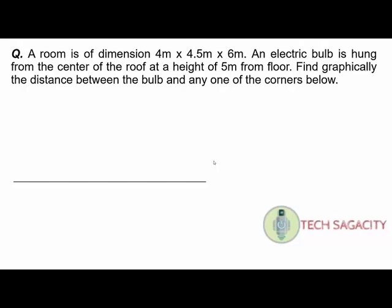So this room has length, breadth, and height. We are looking at the top view. The top view shows length and breadth. This is the top view, and we measure the angle and dimensions: 40 mm and 45 mm for the 4 meter and 4.5 meter sides respectively.